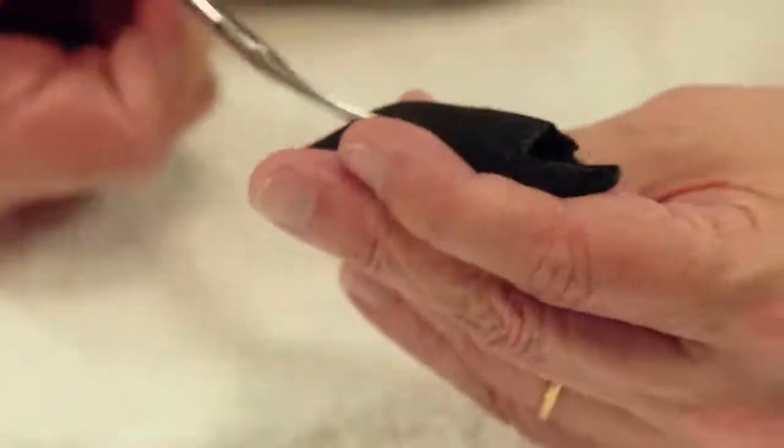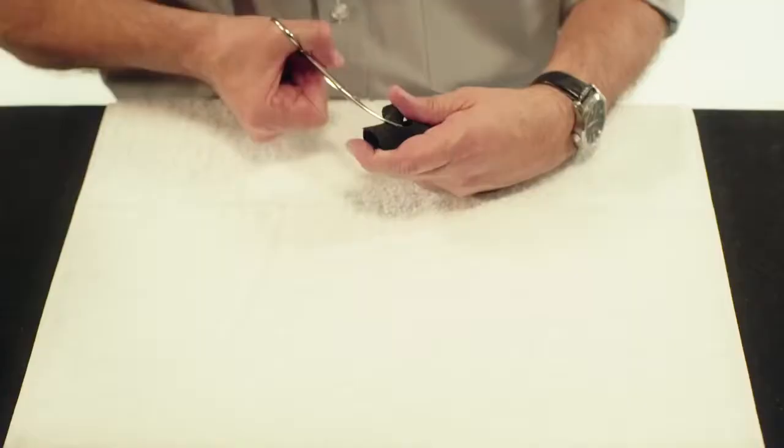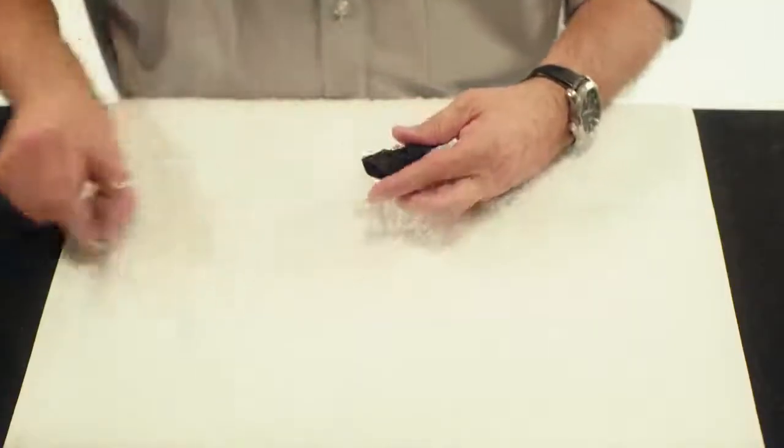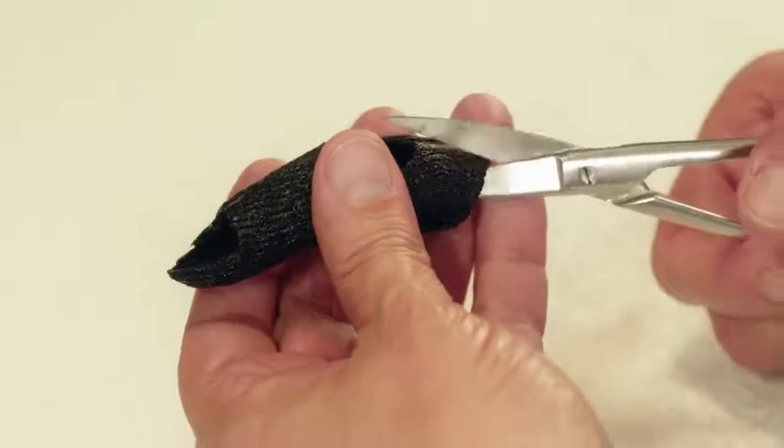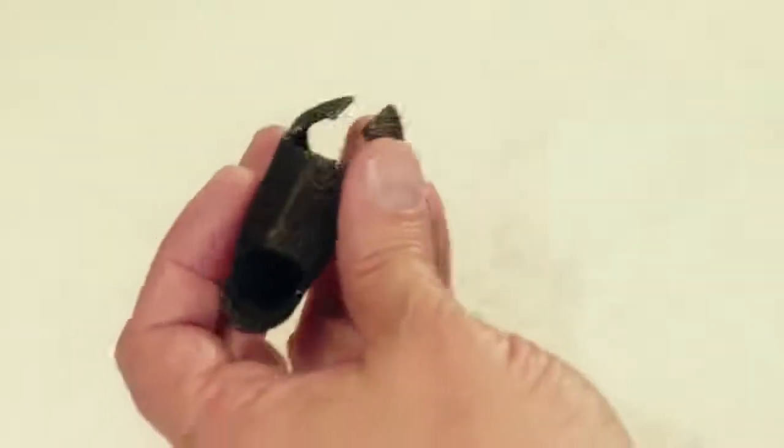Cut out an opening for the PIP joint. Finish the orthosis by trimming excess material on the dorsum of the first phalanx.